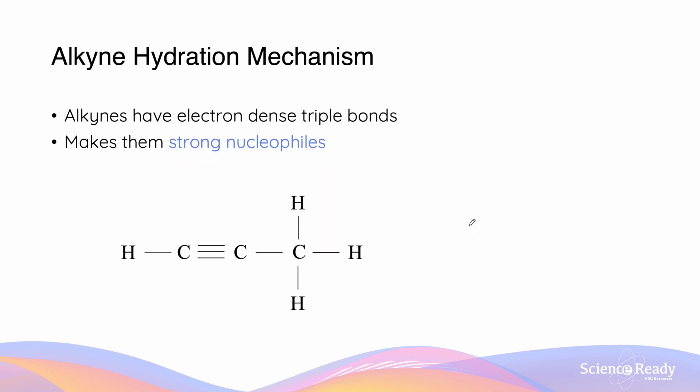As we previously mentioned, alkynes are a form of an unsaturated hydrocarbon and they can engage in addition reactions because of the presence of an electron dense triple bond. Because of this characteristic triple bond which is present in the alkyne, alkynes are what we call strong nucleophiles.